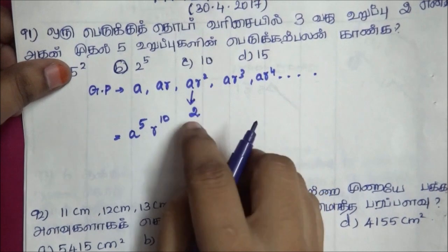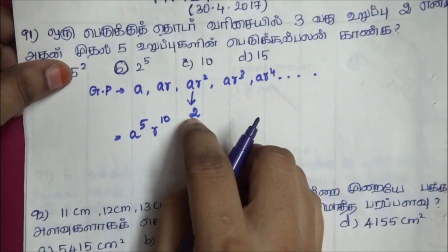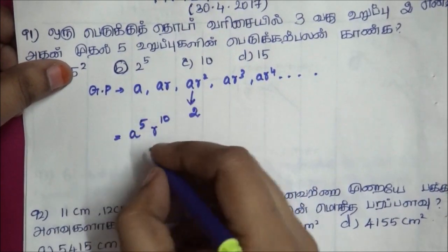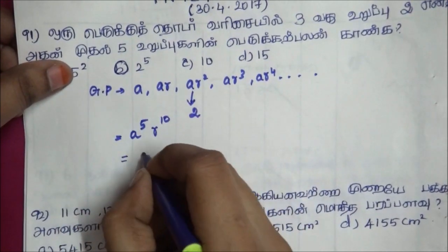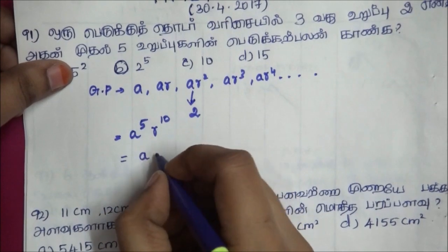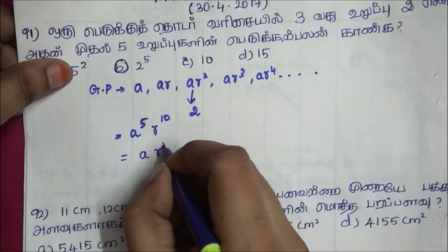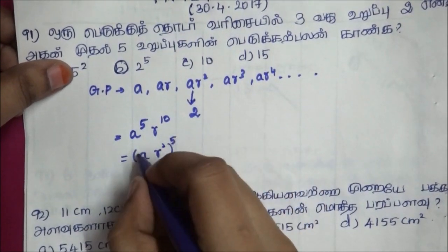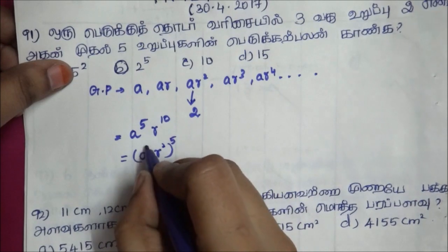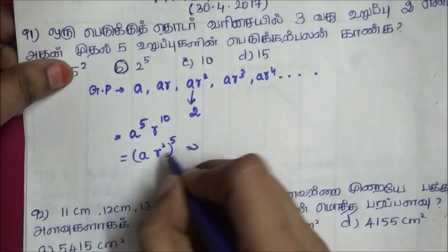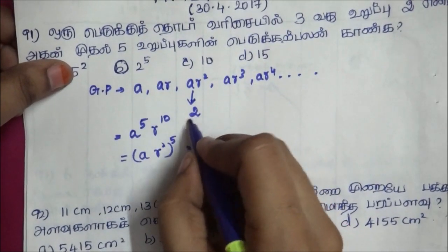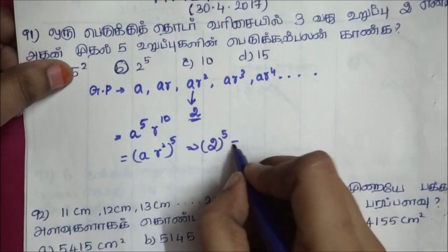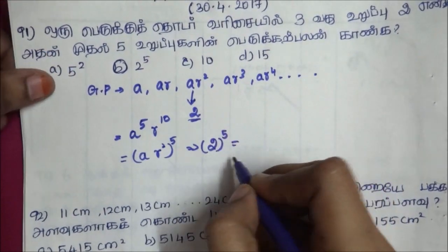AR squared value is 2. If we write AR squared, whole power 5, that is power 5. So R power 10, meaning AR squared is 2, and 2 power 5 — this is the answer.